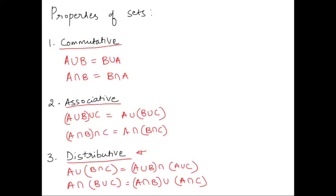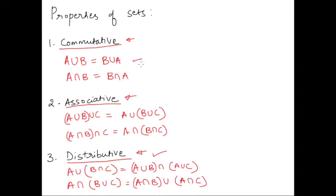Hi guys, this is part 2 of the series on properties of sets. Just a quick recap: we saw in the last lecture what commutative property was and what associative property was. This time let's take a look at what distributive property is. To recap, commutative property is: A union B is equal to B union A, or for intersection, A intersection B is equal to B intersection A.